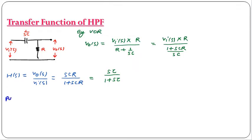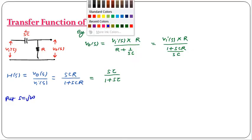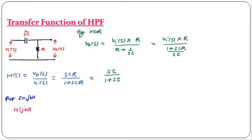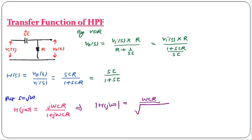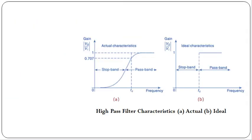Substituting s = jω, we get H(jω) = jωCR / (1 + jωCR). Calculating the magnitude, the numerator gives ωCR and the denominator gives the square root of (1 + (ωCR)²). So |H(jω)| = ωCR / √(1 + (ωCR)²). Now we check the magnitude at ω = 0, ω = 1/(CR), and ω = ∞ to plot the characteristics of the high pass filter.